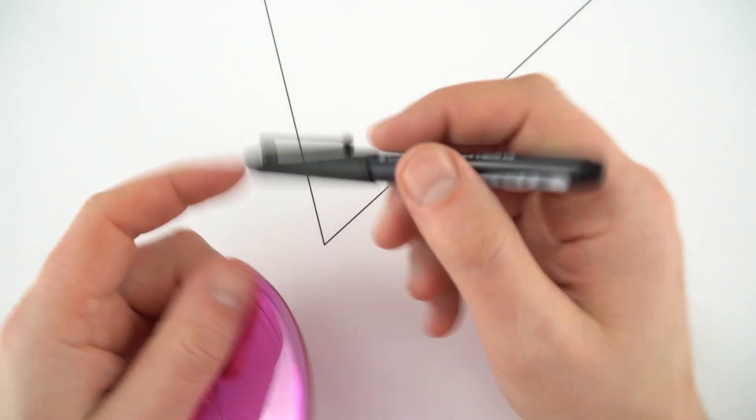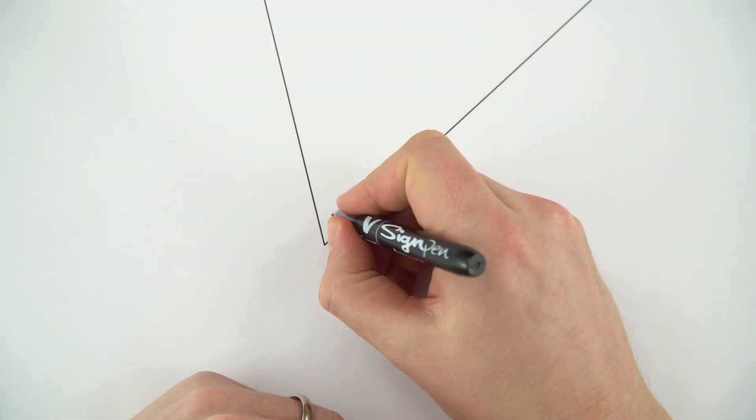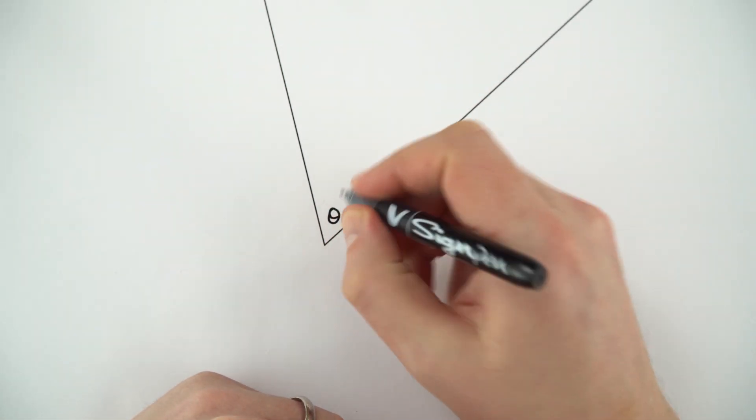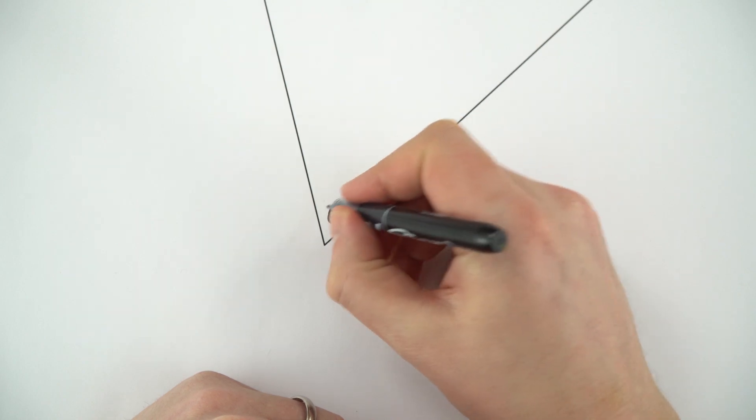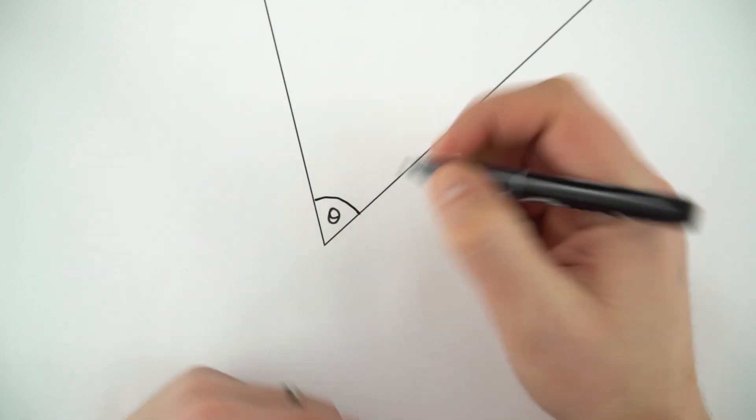Now to actually measure the angle, we're going to look at the angle in here. When we look at angles we often use the Greek letter theta to represent this unknown angle.